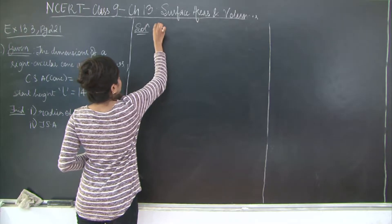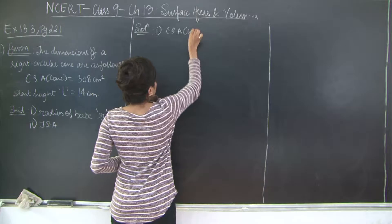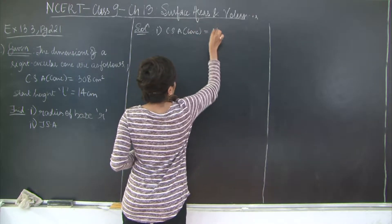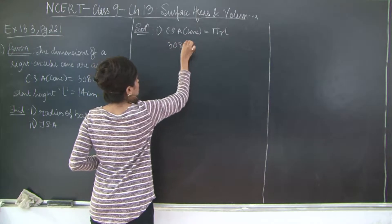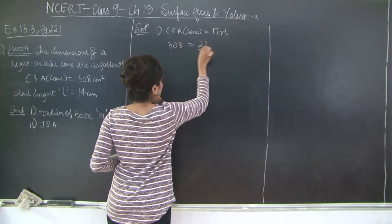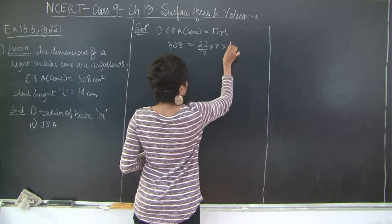So first I will say, curved surface area of cone is equal to π r L. So curved surface area is given to be 308, π we know is 22 by 7. Radius is what we need to find and length is given to be 14.